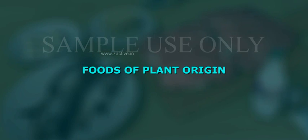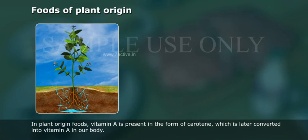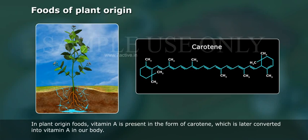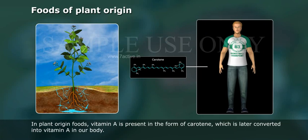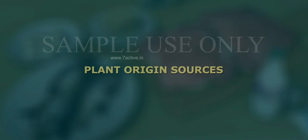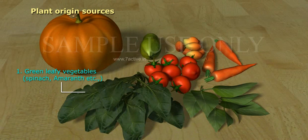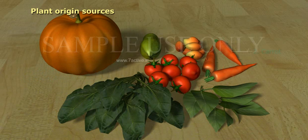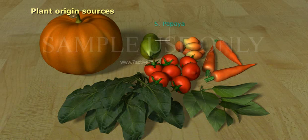Foods of plant origin. In plant origin foods, Vitamin A is present in the form of carotene, which is later converted into Vitamin A in our body. Plant origin sources include: 1. Green leafy vegetables such as spinach, amaranth, etc., 2. Carrot, 3. Tomato, 4. Pumpkin, 5. Papaya, 6. Mango.